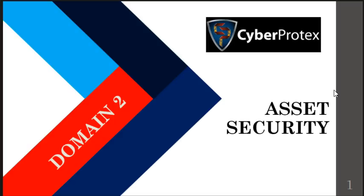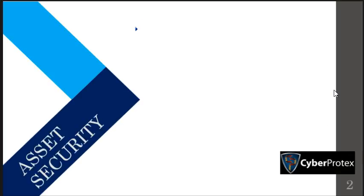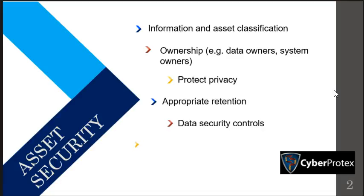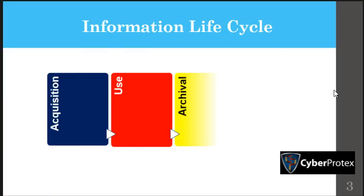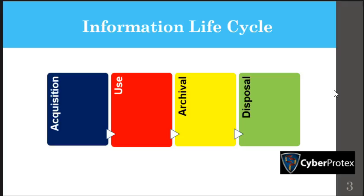They begin this discussion on the information life cycle. This information life cycle starts to try to quantify it into more of a process whenever we start to deal with information — the way we handle the retention policies, the markings, the labelings, the privacy information. It gets into a cyclic approach of acquisition, being able to see how you can use it into archival, and then disposal.